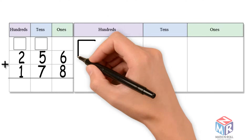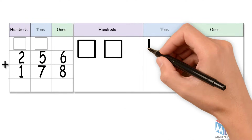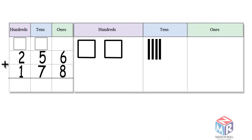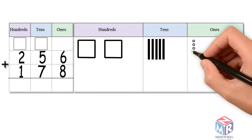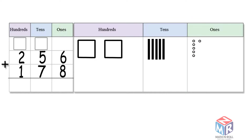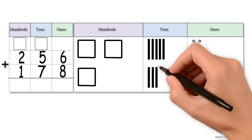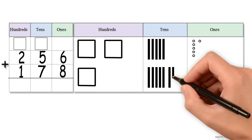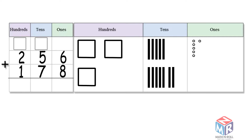Let's draw it out. 256 has two hundreds, five tens, and six ones. 178 has one hundred, seven tens, and eight ones.